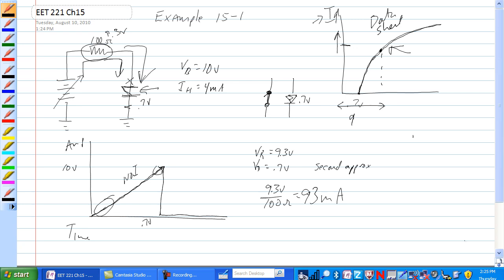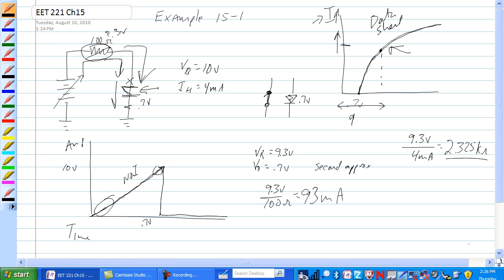So we have 9.3 volts divided by 4 milliamps is equal to 2.325 k ohms. So if this increased to 2.325 k ohms, it would bring the amount of current through this down to 4 milliamps.